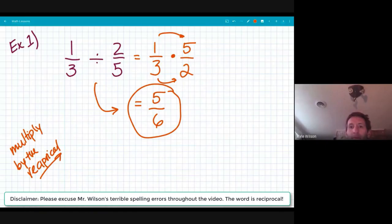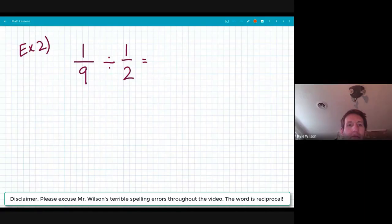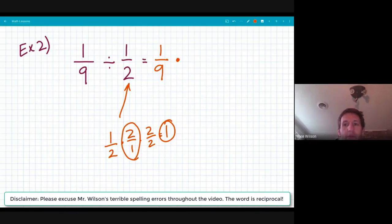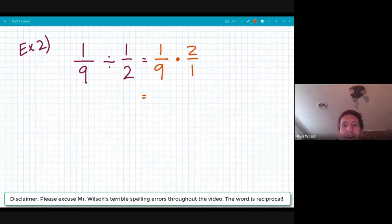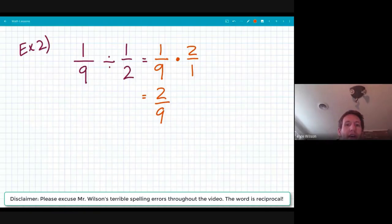On to the next one. Right here, I have one-ninth divided by one-half. What I'm going to do here, I'm going to keep the one-ninth exactly the way that it is. But that division sign is now going to become a multiplication operation. And I need to find the reciprocal of one-half. And as we talked about before, one-half and two over one is going to give me a product of one. So the reciprocal of one-half is two, or two over one. And getting in the habit of stacking the equal signs, I'm going to complete my multiplication, which would be one times two is two, piece of cake. And nine times one is nine, equally a piece of cake. So one-ninth divided by one-half equals two-ninths.